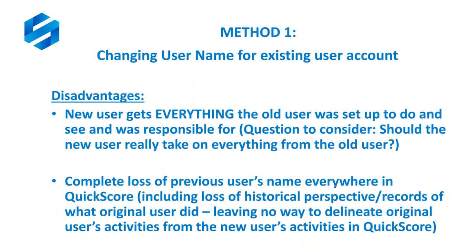Regarding disadvantages of method one: the first disadvantage is the exact same as the last advantage — the new user gets everything the old user was set up to do and see and was responsible for. This begs the question: should the new user really take on everything from the old user? Additionally, there is a complete loss of the previous user's name everywhere in QuickScore, including in historical records, leaving no way to delineate the original user's activities from the new user's.